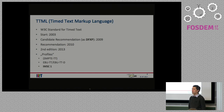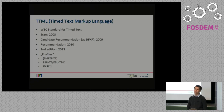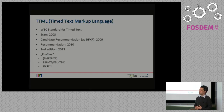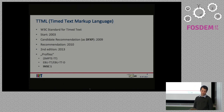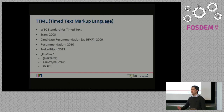The major milestone for TTML was 2009 when it was published as Candidate Recommendation — at that time still as DFXP. Some of you may know that acronym, and unfortunately they changed it when it reached final recommendation to TTML. Still some people do not make the link between DFXP and TTML, but if you see DFXP, this is TTML. TTML reached final recommendation status in 2010, and three years later there was a second edition which mainly brought some clarification and corrections but no new features.